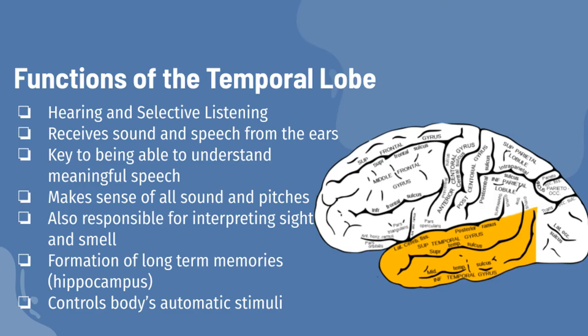Memory and attention are some other skills associated with the temporal lobe. In particular, the temporal lobe aids in the formation of long-term memories, which is the hippocampus, as well as visual and verbal memories. Finally, the temporal lobe controls your body's automatic responses to stimuli, such as hunger and thirst.